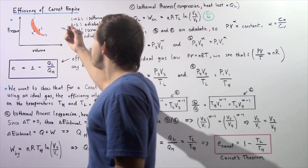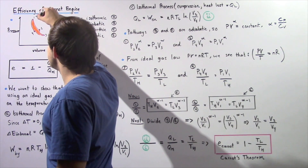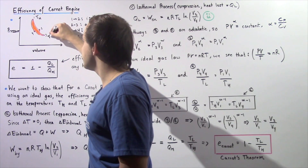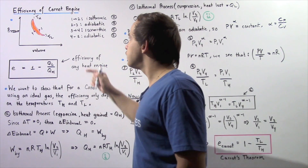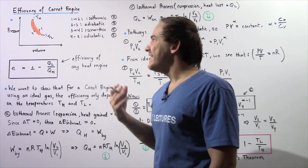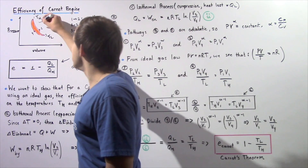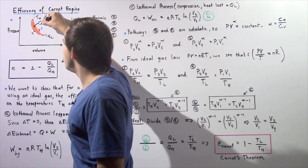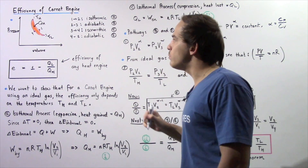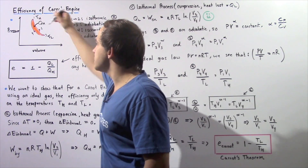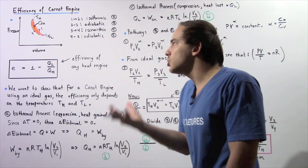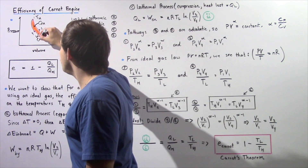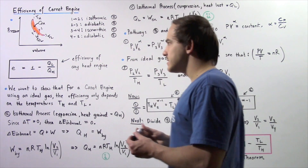Let's suppose at position 1, our temperature is given to be TH, and at position 3, our temperature is given to be TL. When we go from point 1 to point 2, heat flows into our system — let's say the amount of heat that flows in is QH. And when we go from position 3 to position 4, heat is lost by our system, and let's say that QL heat flows out.